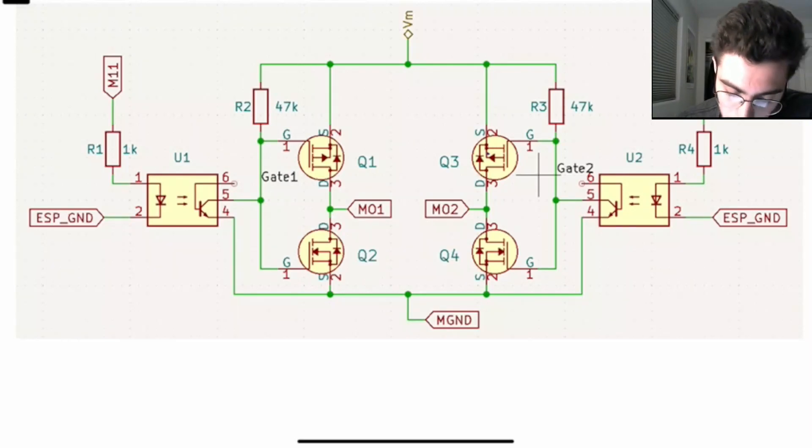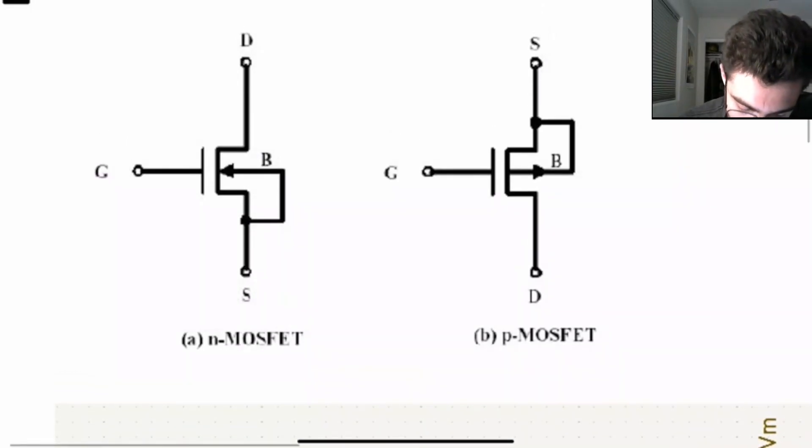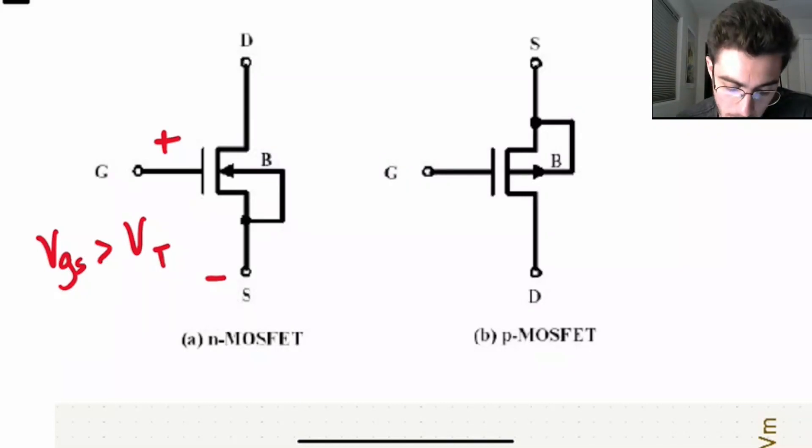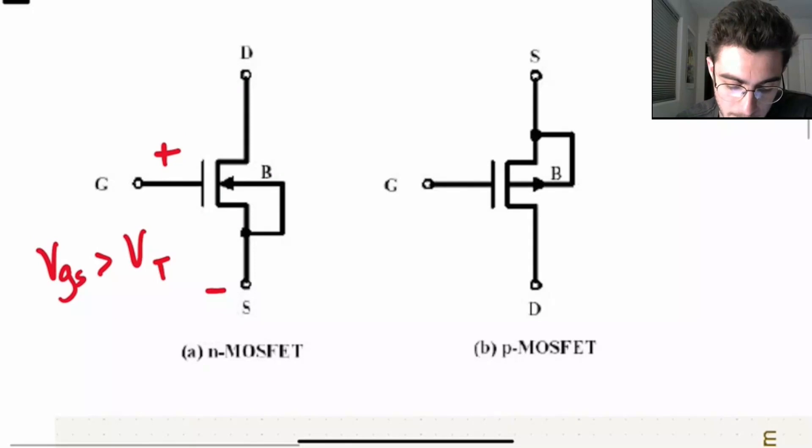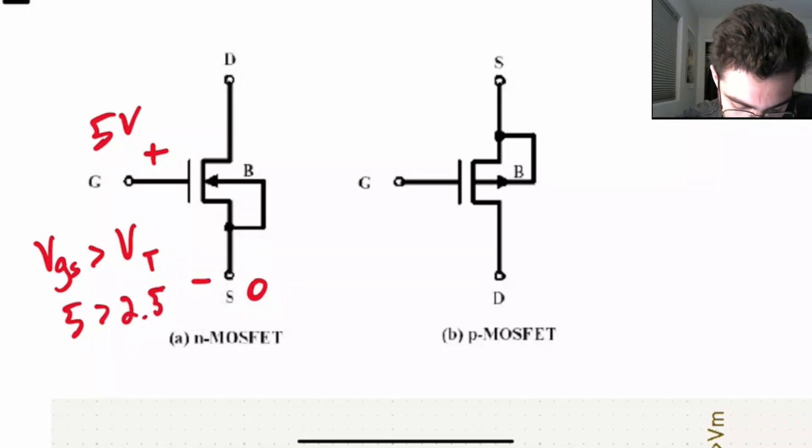But most importantly, we have the transistors. So a quick recap on how transistors work. So for the NMOS transistor, in order to turn it on, the voltage between the gate and the source needs to be greater than a certain threshold. Now, the threshold voltage depends on what kind of transistor you're using. For example, some transistors might have a voltage threshold of 2.5 volts. So if you apply 5 volts up here and you have 0 volts down here, then you would have 5 is greater than 2.5. And then you would get current flow through the transistor.